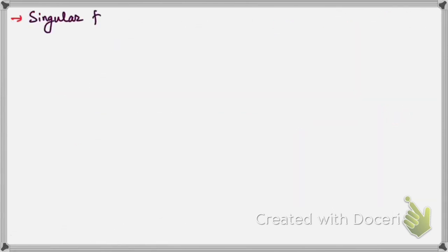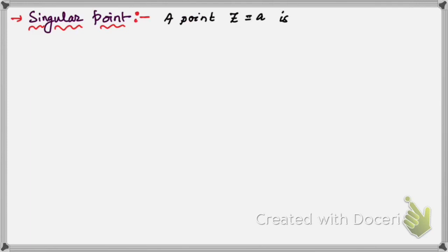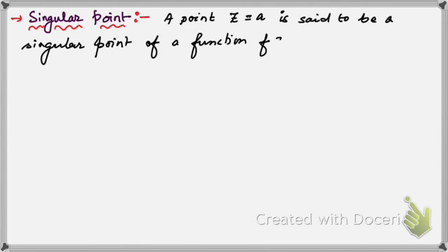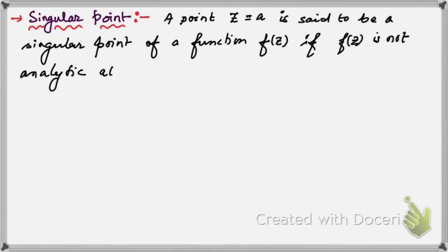First let us discuss about singular point. A point z equal to a is said to be a singular point of a function f(z), where z is a complex number, if this function f(z) is not analytic at the point z equal to a.